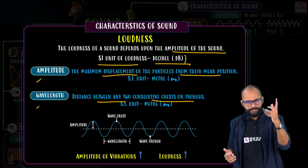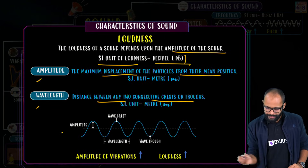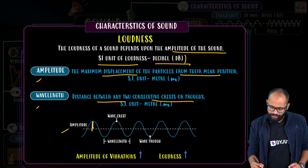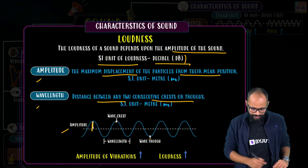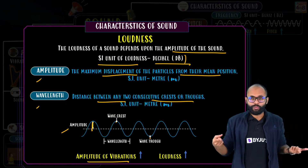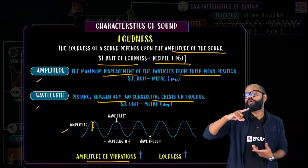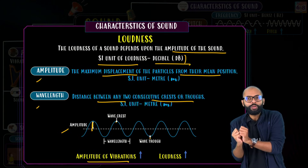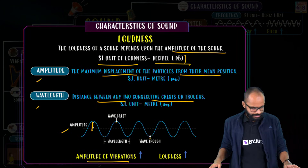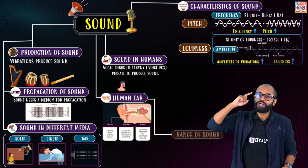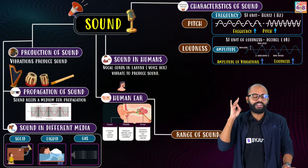Looking at the diagram: amplitude is the height of the wave, crests are peaks, troughs are dips, and the distance between two crests or two troughs is called wavelength. If amplitude is more, loudness is more. Pitch and loudness are the two most important characteristics — questions repeat every year from these.